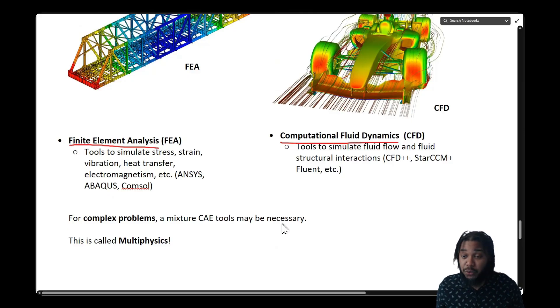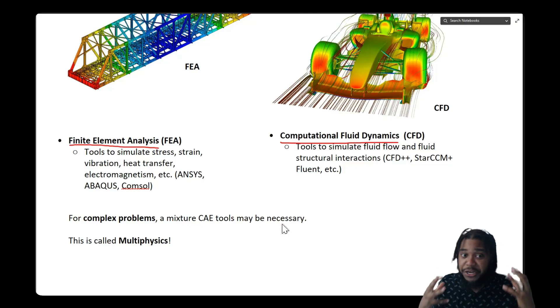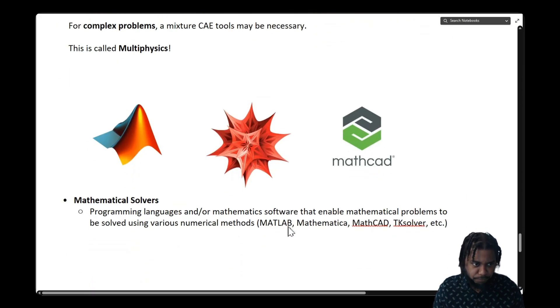The reality is that most of our modern designs are subject to more than one type of physics. There can be loads, temperatures, electromagnetism, and fluids all flowing at the same time. So for complex problems, often a mixture of these tools is necessary. When we are mixing different tools together we call it multi-physics, multi-physics based simulations.